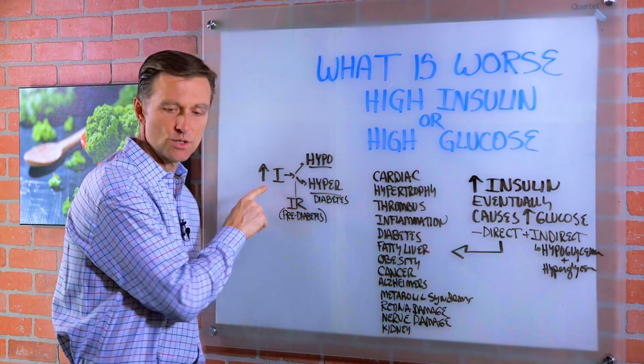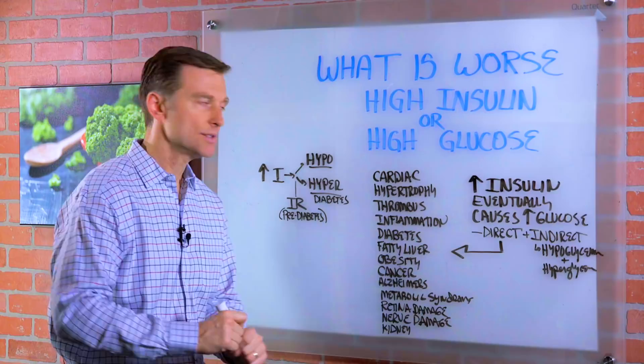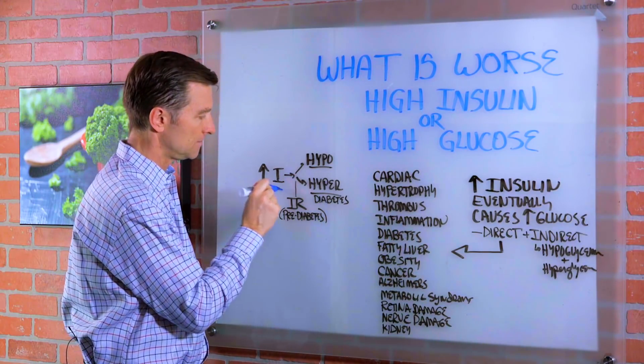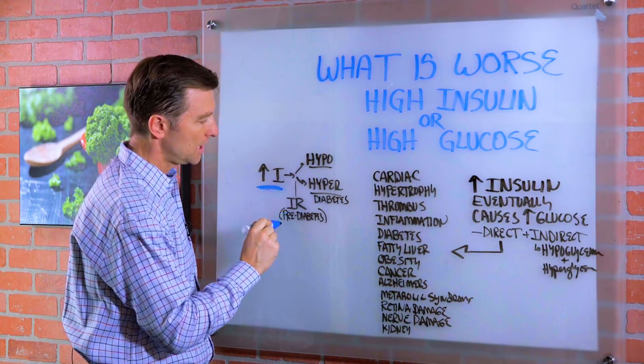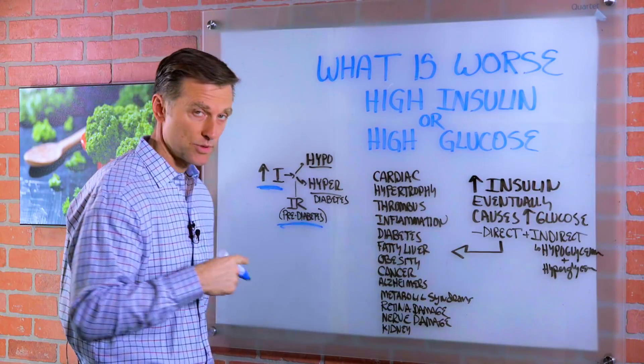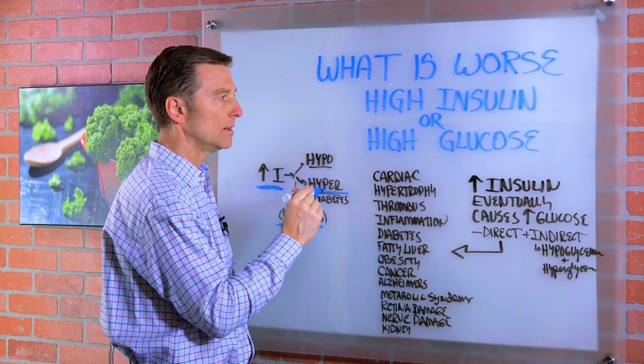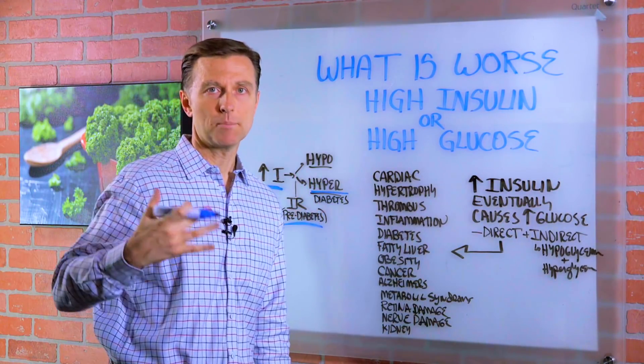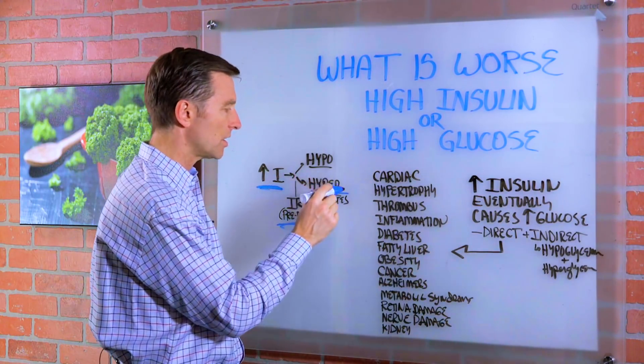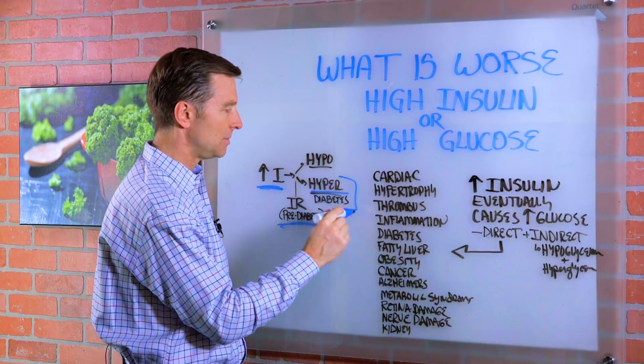So the first thing to occur in the chain of events is high insulin. Then a person develops insulin resistance, which is prediabetes. Then eventually they'll develop hyperglycemia, which is high sugar. Hyperglycemia is high amounts of sugar, which is now diagnosed as diabetes.